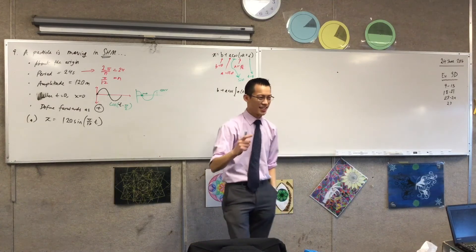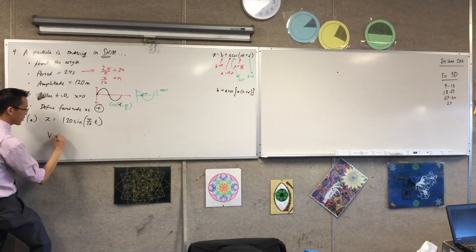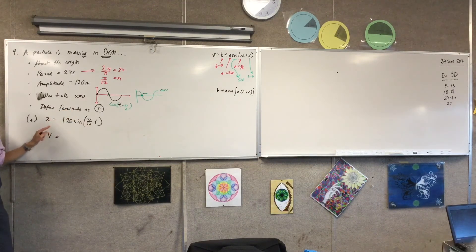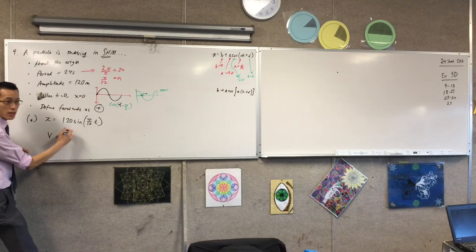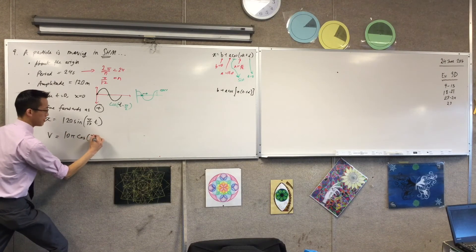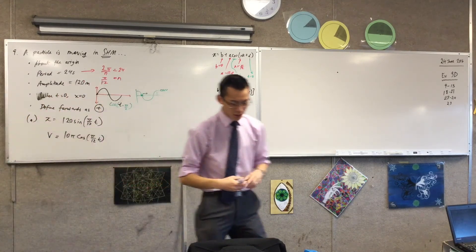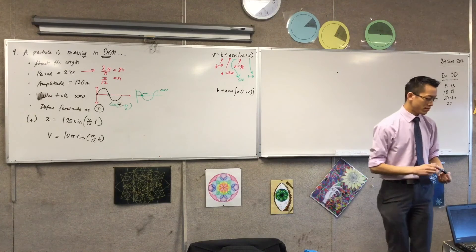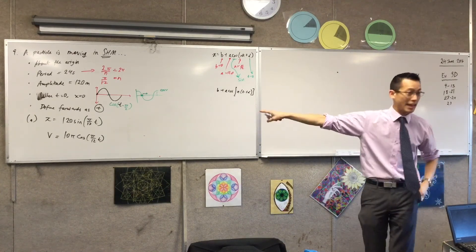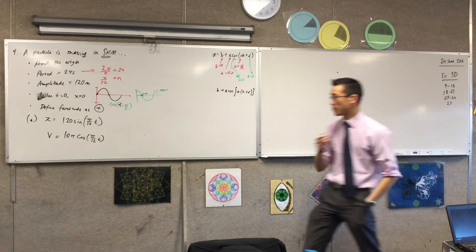What am I going to do next? Differentiate. Excellent. So, to find the velocity, I'm just going to differentiate this guy. The pi on 12 comes out the front, which leaves me with 10 pi. Sine turns into cosine. This guy stays the same. And you don't need to do any fancy calculus after this to state the maximum speed. You can just look at that equation, and you can tell me what the maximum speed is. It's going to be 10 pi. Very good.